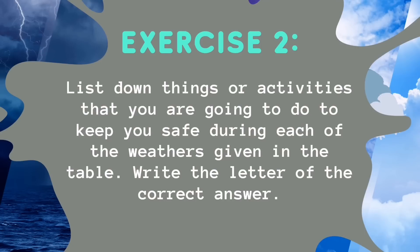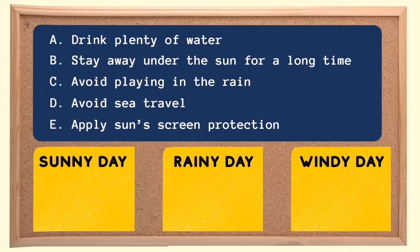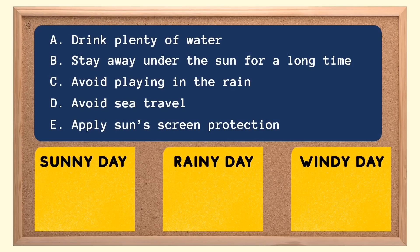Let's have Exercise 2. List down the things or activities you are going to do to keep safe during each weather — write the letter of the correct answer only. The activities are: A. Drink plenty of water. B. Stay away from the sun for a long time. C. Avoid playing in the rain. D. Avoid sea travel. E. Apply sunscreen protection. Meron tayo ditong tatlong weather conditions: sunny day, rainy day, and windy day. Ilagay mo lang yan sa bawat weather condition — just write the letters only. Good luck!